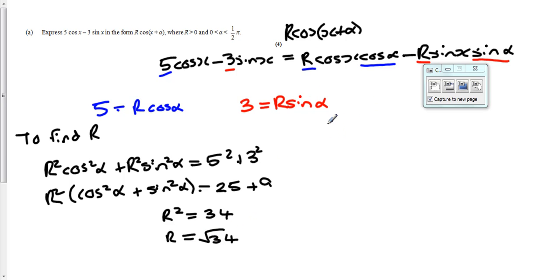So now we've found R, but what we're also going to need to do is find α. To do that, we're going to use one of our other trig identities. If we divide this by this, we end up with Rsin(α) over Rcos(α), and that will be equal to 3 over 5. The R's will cancel, and sine divided by cos is tan, which means that α will be equal to the inverse tan of 3 over 5.